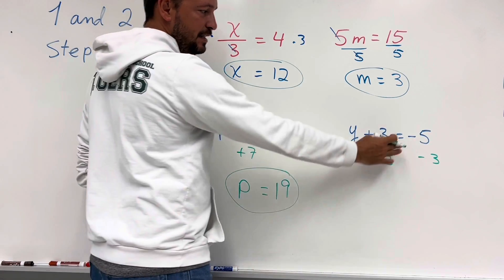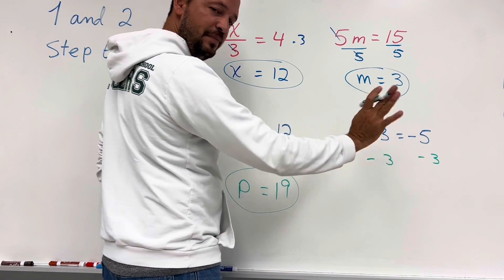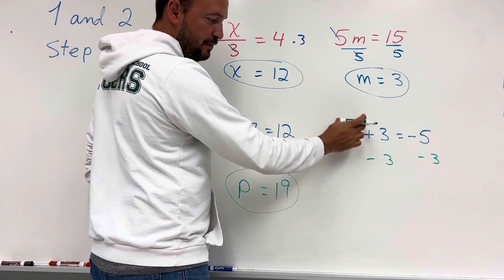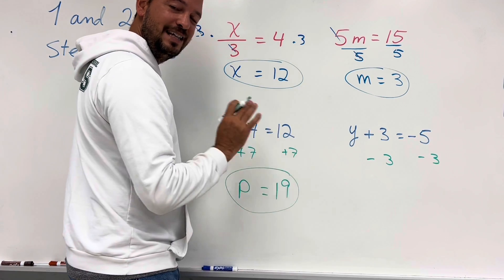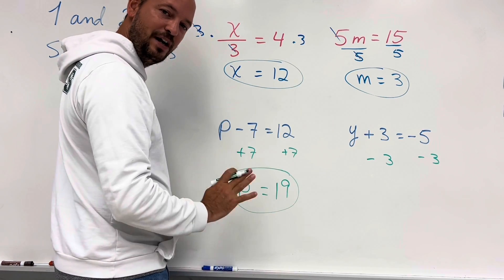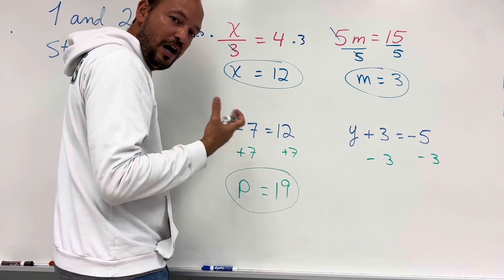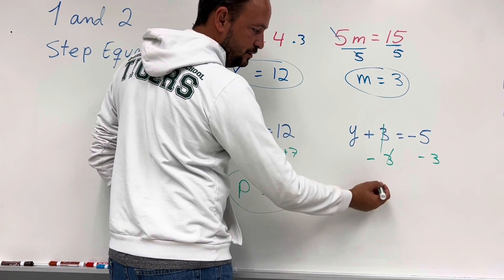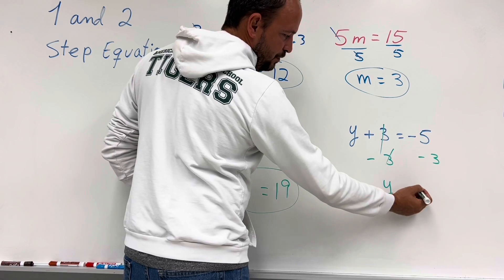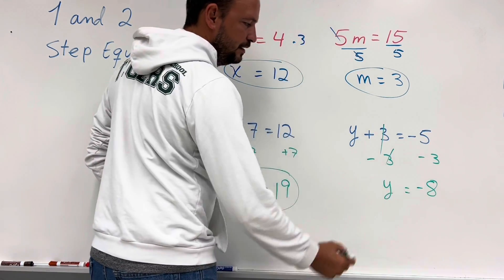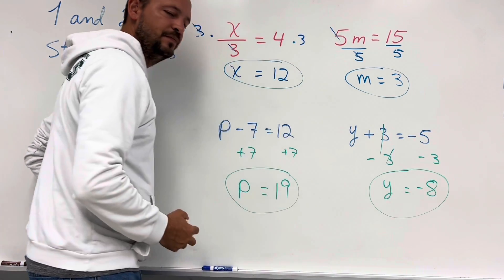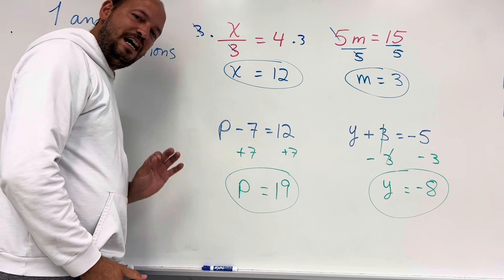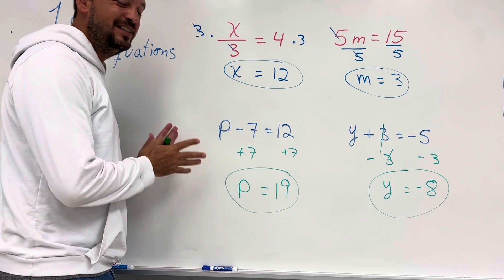In this case we subtract 3 on both sides, because we need a 0 where the variable is. It doesn't matter what happens on the number side, but where we have the variable we need a 0 so the variable stands alone — to find the value of the variable. This gives us y equals negative 8. Those are one-step equations.